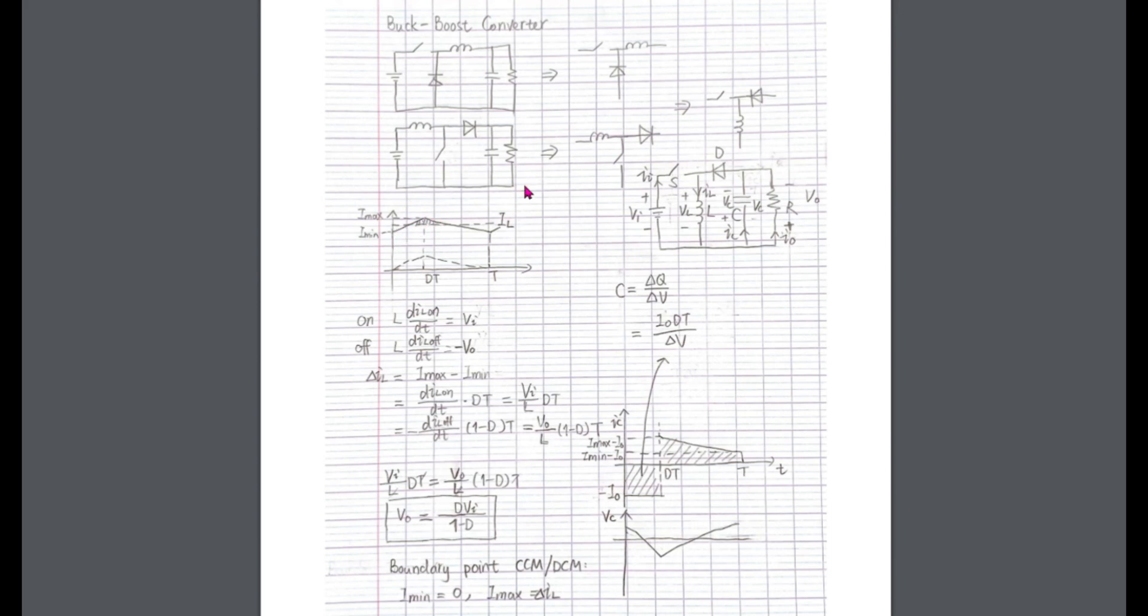When the switch is closed, we have this circle. The current in the inductor increases. The voltage of it equals V in.